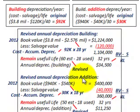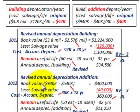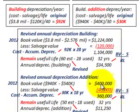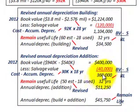For the revised annual depreciation on the addition, we calculate its book value by taking the original cost less accumulated depreciation for the first 18 years: $30,000 per year times 18 years equals $540,000. Subtracting that from the cost of $940,000 gives a book value of $400,000. We then subtract the salvage value of $40,000, which hasn't changed, leaving $360,000.